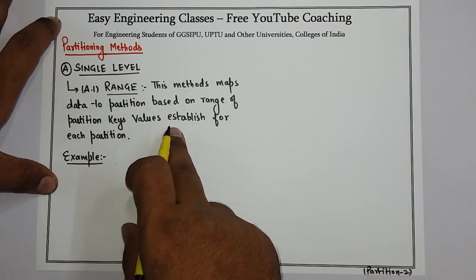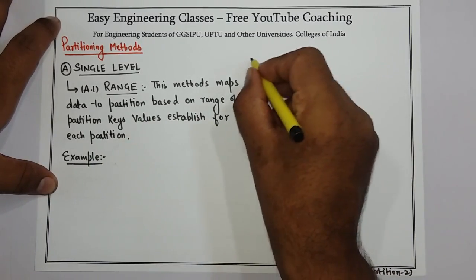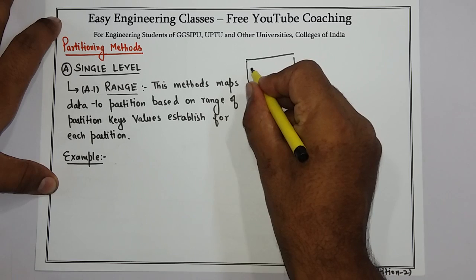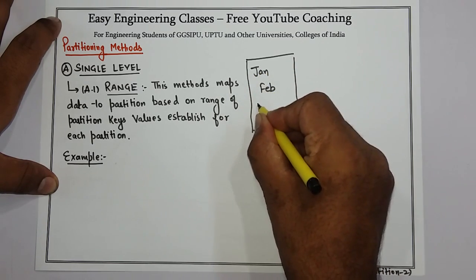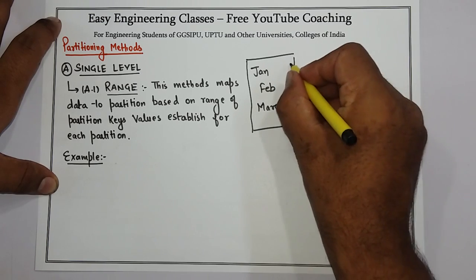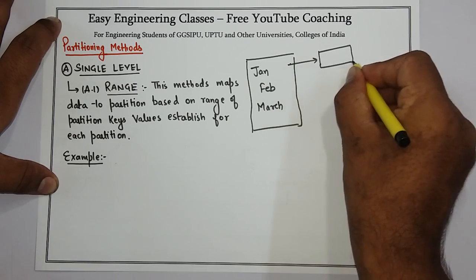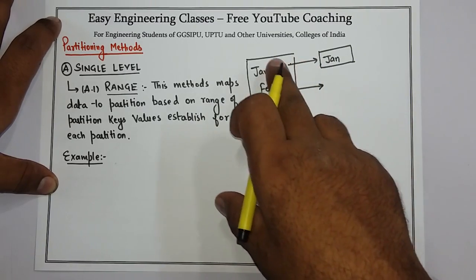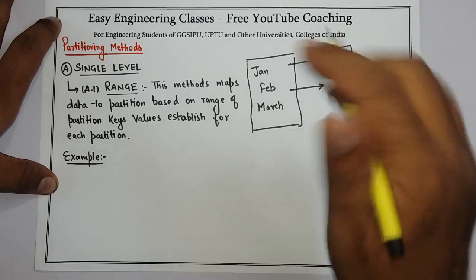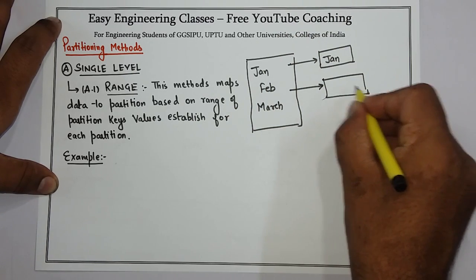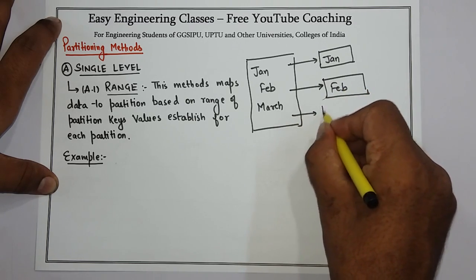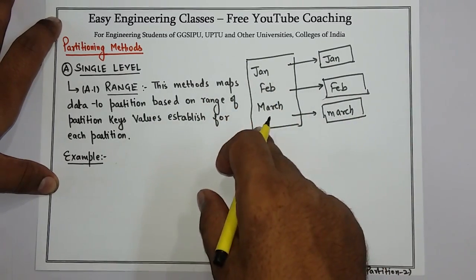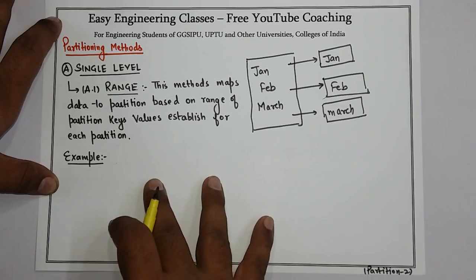The range method maps data to partitions based on the range of partition key values established for each partition. For example, if I have a database that contains sales data, the data can be for January sales, February, March, and so on. I can partition that data in range format — for January, the range can be products sold from 1st January to 31st January, then from 1st February to the last day of February, and similarly for March.